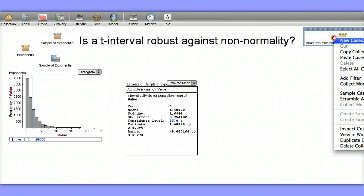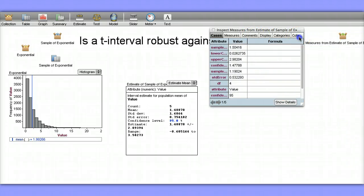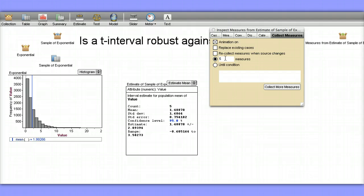Let's actually inspect the collection and change this to be collecting another 95 measures so that we have a total of 100 different confidence intervals.